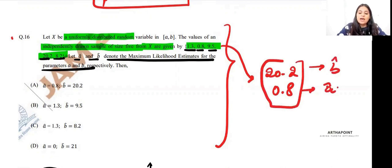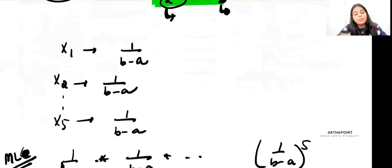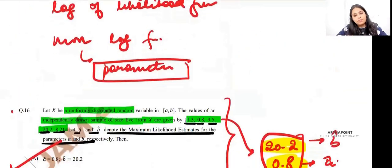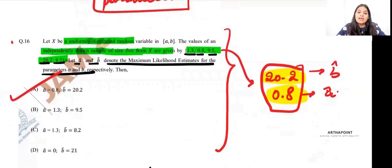This is the best my sample can estimate about A and B. I only have five data points, and from those, I can tell you the min and max, which become A and B. So the answer is A: when B is 20.2 and A is 0.8, the difference B-A is maximum, so 1/(B-A) becomes minimum, and I maximize my likelihood function.